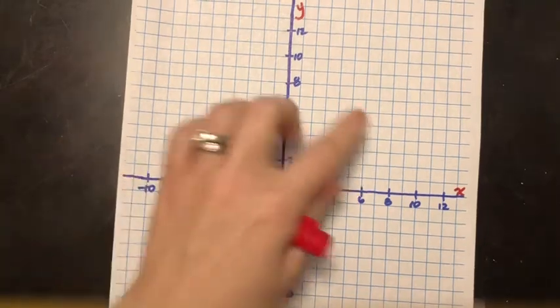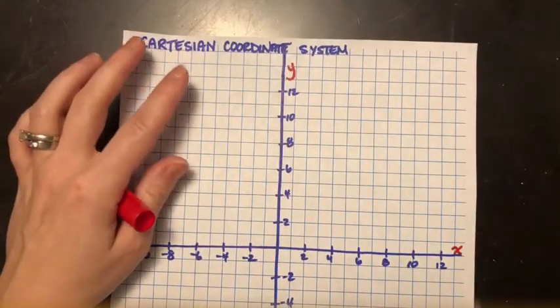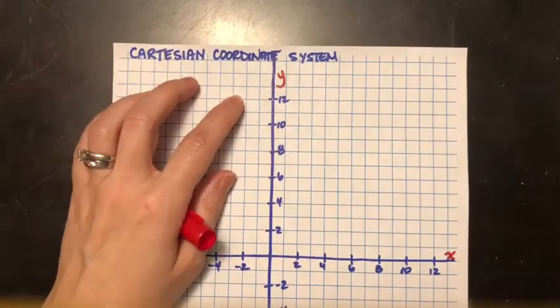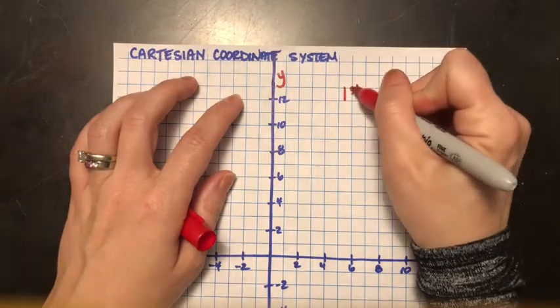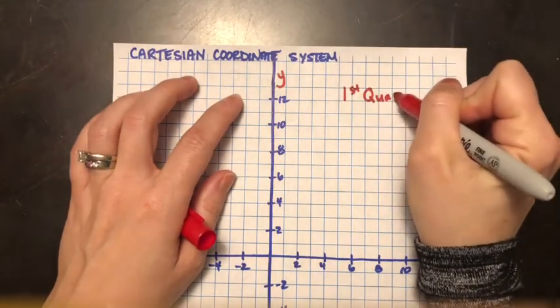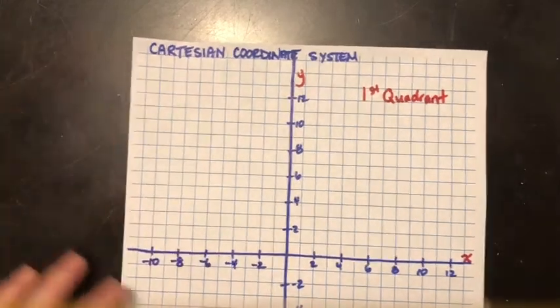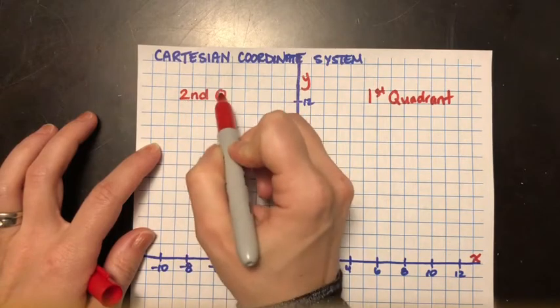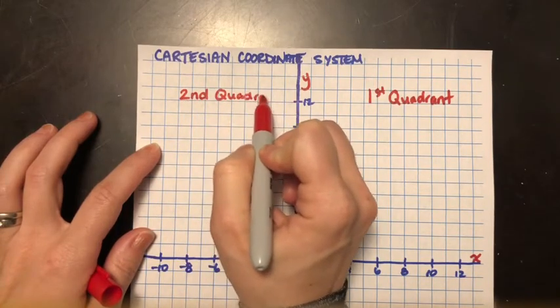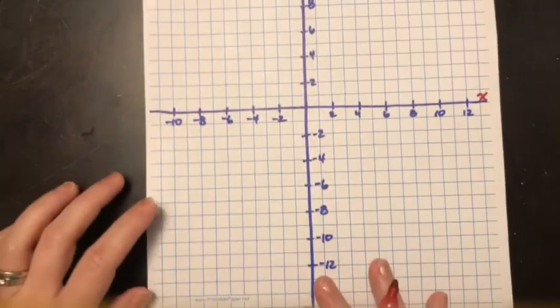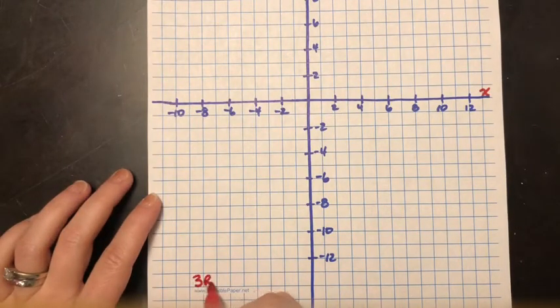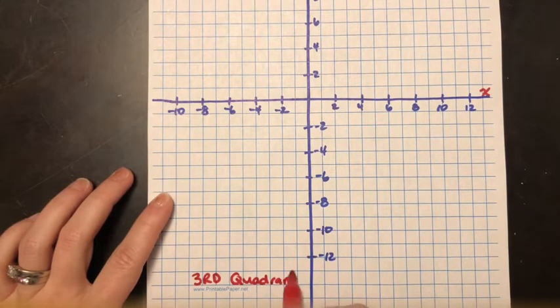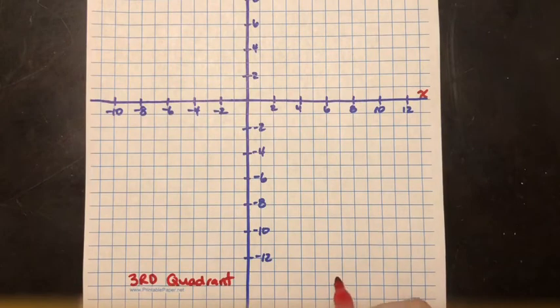Okay, these are the separate areas. So in earlier grades you probably were only ever doing work in this particular zone up here. This is called the first quadrant. The second quadrant is over here. Then we go down over here for the third quadrant, and finally to our last one here, the fourth quadrant.